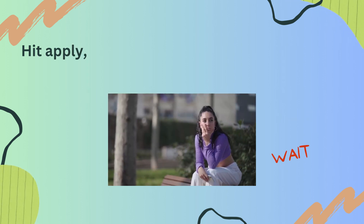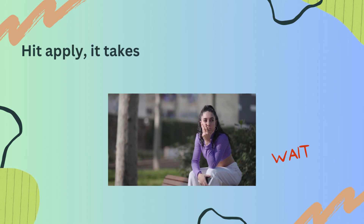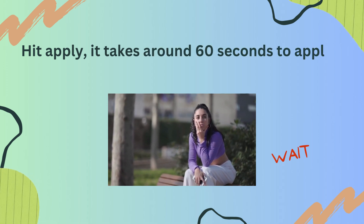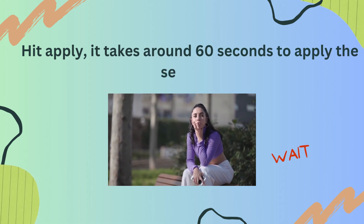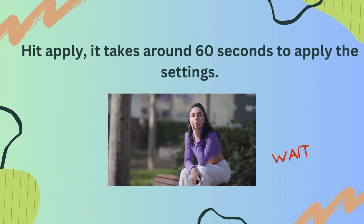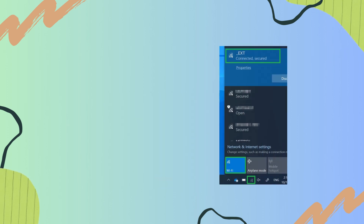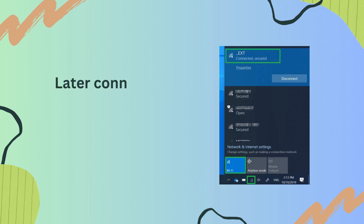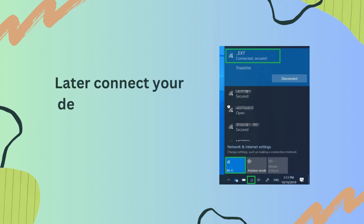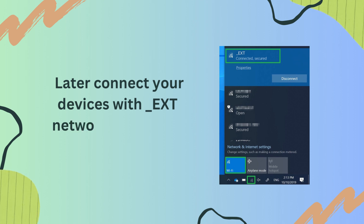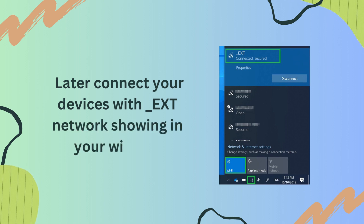Hit Apply. It takes around 60 seconds to apply the settings. Afterward, connect your devices to the network with underscore ext showing in your Wi-Fi list.